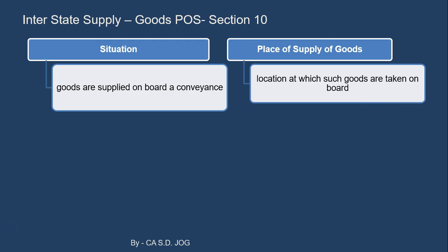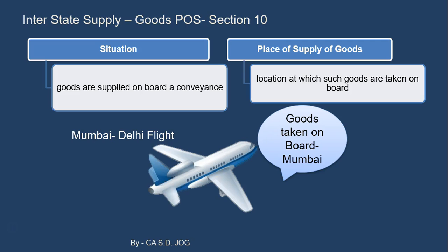Then, goods are supplied on board a conveyance — the place of supply is the location at which such goods are taken on board. For example, there is a flight from Mumbai to Delhi. Goods such as beverages and food to be served are taken on board in Mumbai before the flight moves. So the location at which such goods are taken on board — Mumbai — will be the place of supply for goods supplied within that flight.